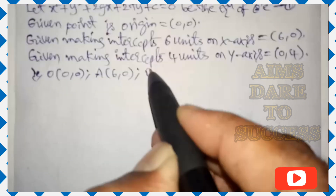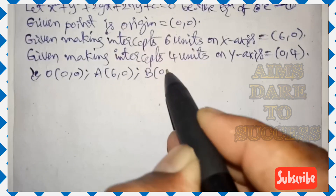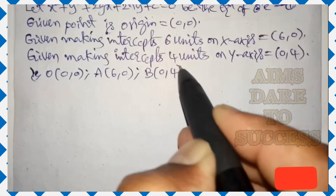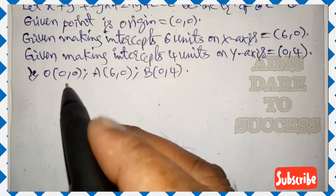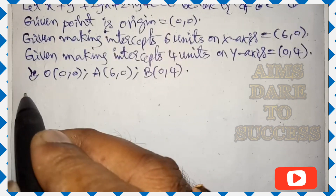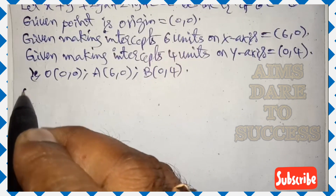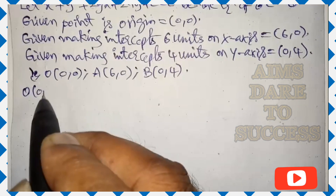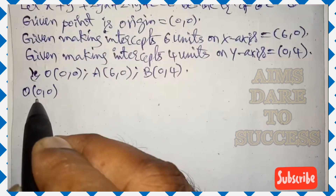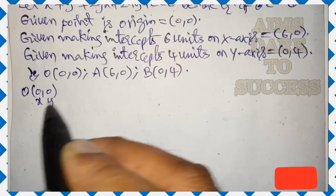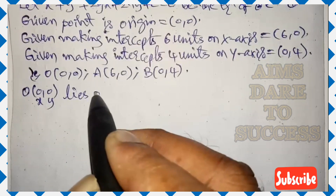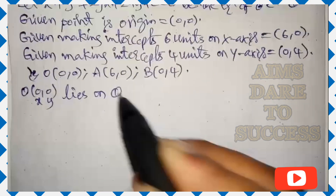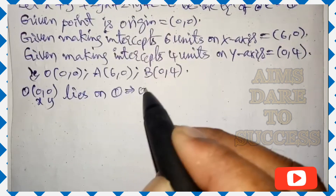You can write the three points: (0, 0), (6, 0), and (0, 4). You have three points — one by one you can substitute them into the standard equation of the circle.